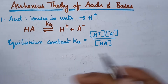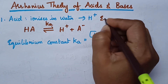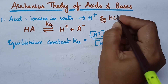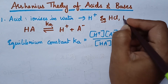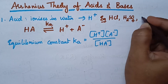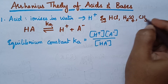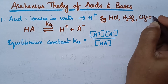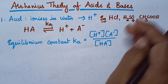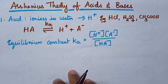Coming to the examples of Arrhenius acids, it includes HCl, H2SO4, acetic acid, etc. All these can be called as acids according to Arrhenius theory.